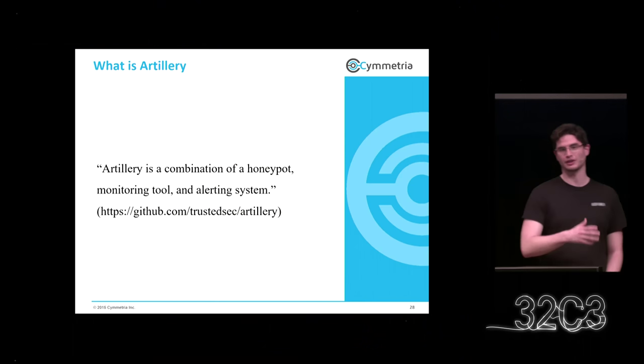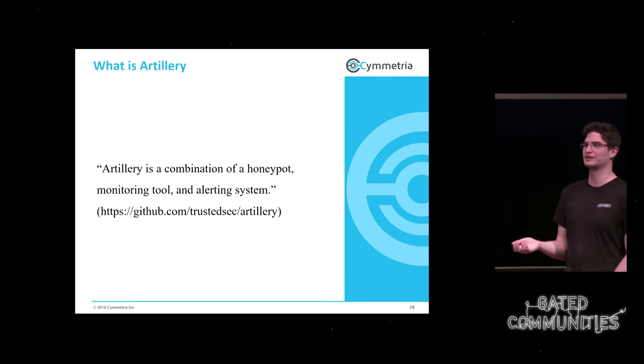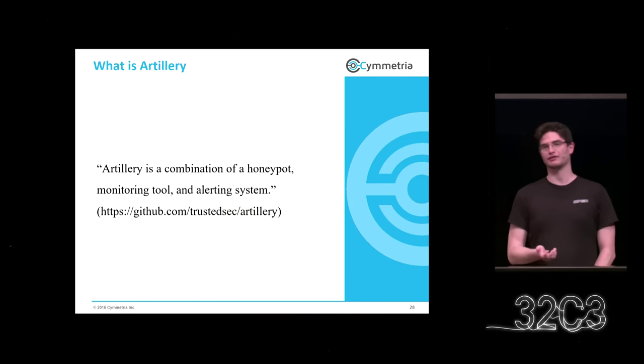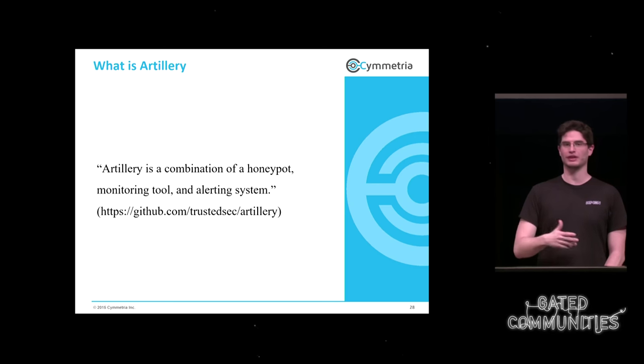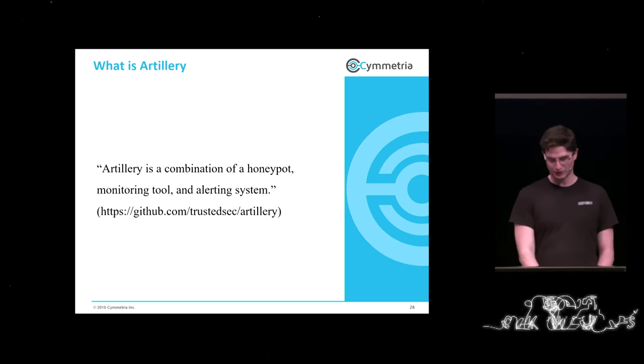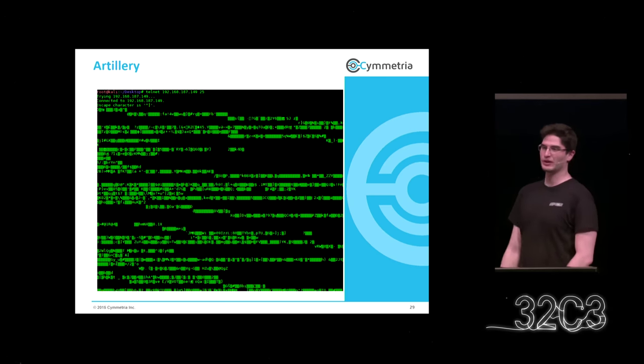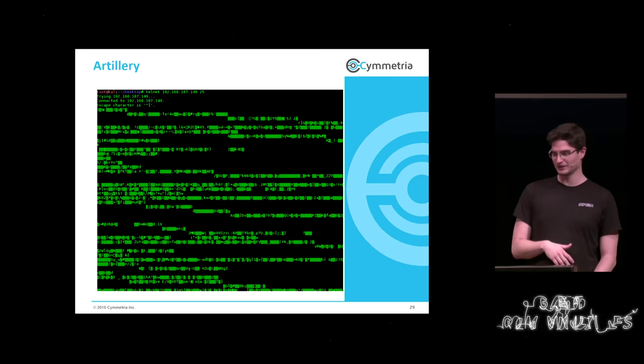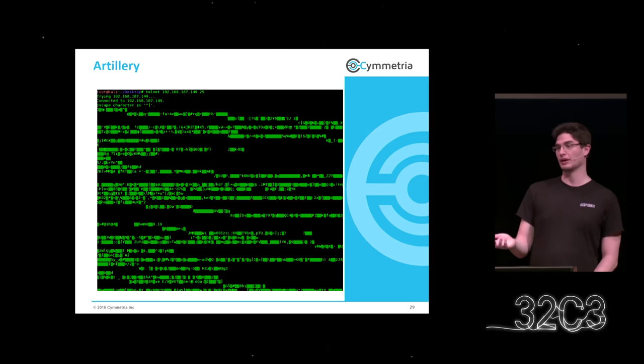Wir werden jetzt einige Projekte anschauen – von den einfachsten bis zu den kompliziertesten – und ich zeige euch, wie jedes von denen eine weitere Schicht Tarnung eingibt. Fangen wir mit Artillery an. Artillery ist ein sehr cooles Projekt, sehr verbreitet. Man führt es aus und es öffnet alle Ports, die interessant für Angreifer aussehen – DNS, HTTP und so weiter. Jedes Mal wenn ein Port in Zugriff genommen wird, gibt es einfach zufällige Informationen raus.